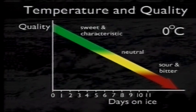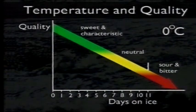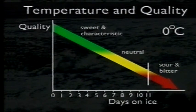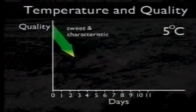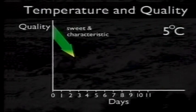At 0 degrees centigrade, the shelf life of most white fish is around 11 days. However, the useful shelf life for fish stored at 5 degrees is about 4 days.